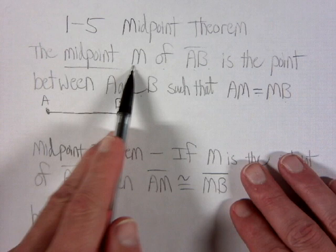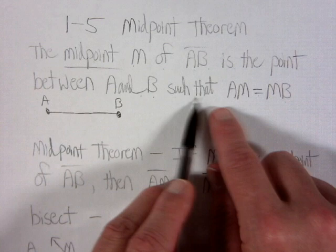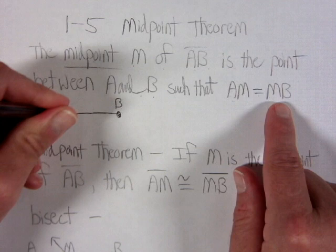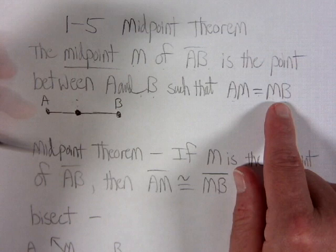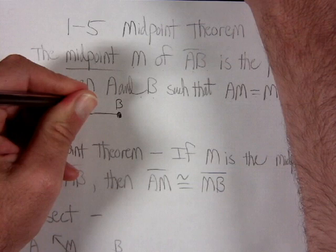If we've got segment AB, then M would be the midpoint if it's the point between A and B — so it must be on the segment. It can't just be anywhere on the segment; it's got to be the point such that AM equals MB. The only place we can put M where that would occur is right in the middle. So if M is right in the middle, it's going to be the midpoint.